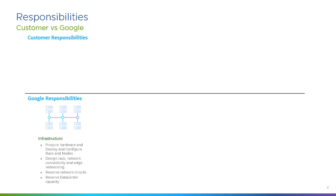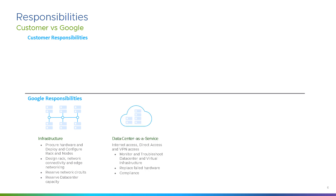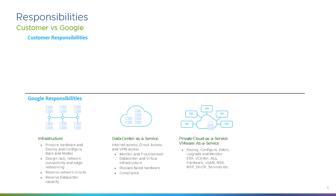Starting with Google's responsibilities at the bottom: all infrastructure is Google Cloud Platform's responsibility — deploying hardware, configuring racks and nodes, data center connectivity, internet access, direct access, VPN access, and replacing failed hardware. Google is also responsible for private cloud as a service and VMware as a service, which includes deploying, configuring, patching, upgrading, and monitoring all ESXi and vSphere components — ESXi itself, vCenter, hardware patches and updates, vSAN, NSX-T, network time protocol, DHCP services.